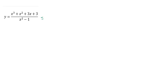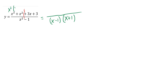Step one is to factor. The denominator is a classic difference of squares: x minus 1 times x plus 1. The numerator has four terms, so it's a factor by grouping problem. On the left side, the GCF is x squared; on the right side, the GCF is positive 3. So it factors to x squared plus 3 times x plus 1.